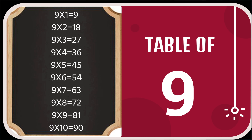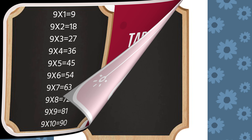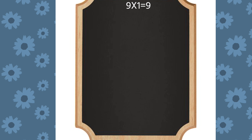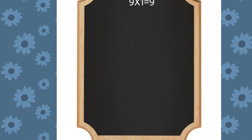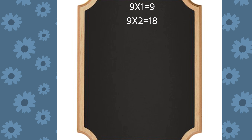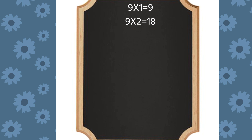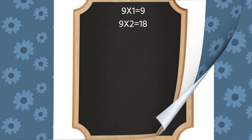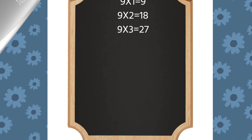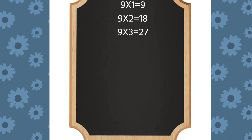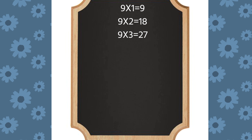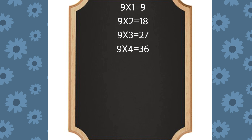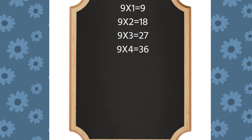Table of Nine. Nine ones are nine. Nine twos are eighteen. Nine threes are twenty-seven. Nine fours are thirty-six.